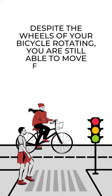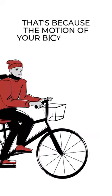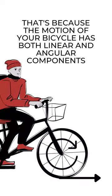Despite the wheels of your bicycle rotating, you are still able to move forward. That's because the motion of your bicycle has both linear and angular components.